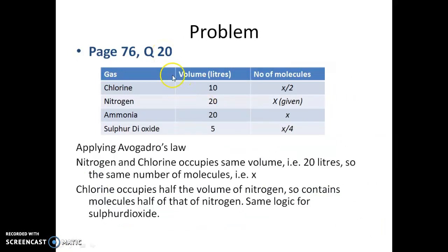Go to problem 20. You will be seeing that 20 liters of nitrogen contains X molecules. It is given. So, 10 liters will contain half. Again, 20 liters of ammonia will contain X and 5 liters of sulfur dioxide will contain X by 4.